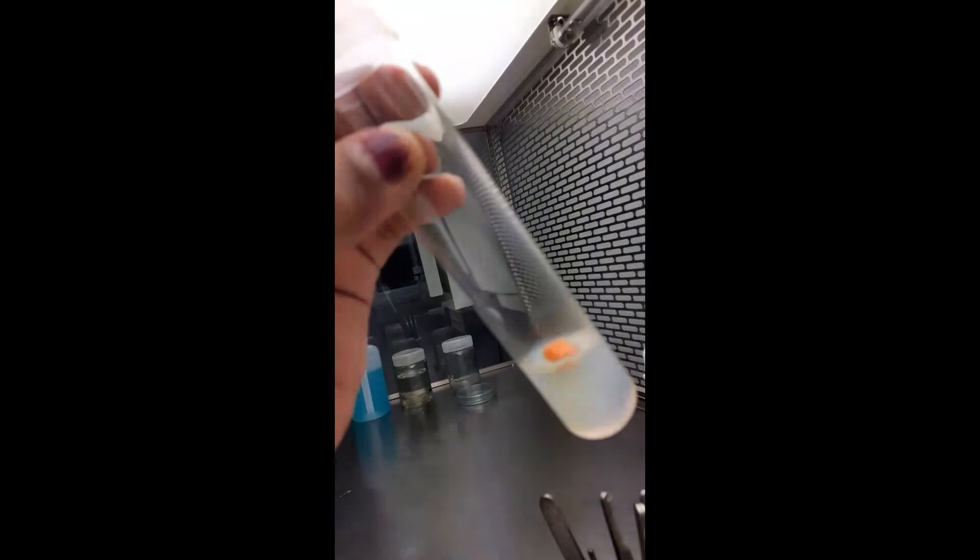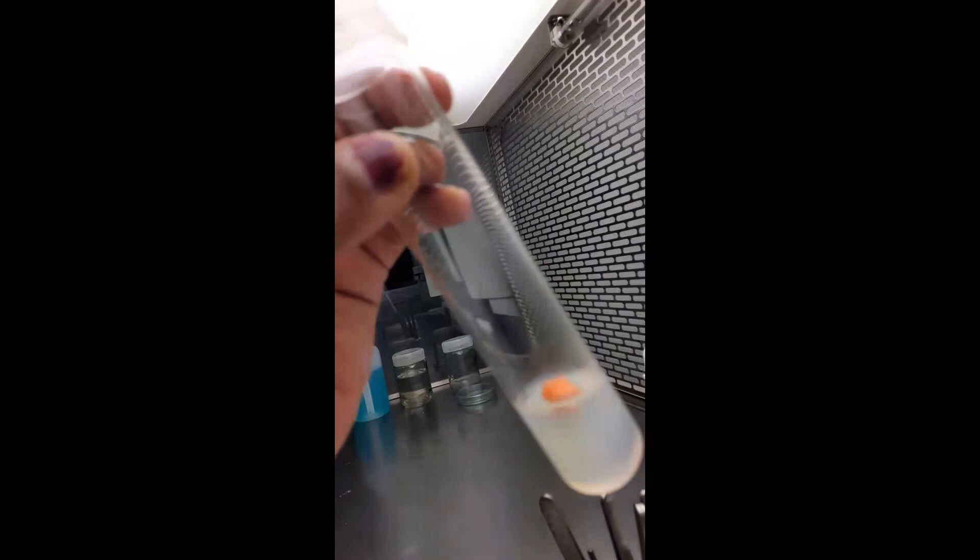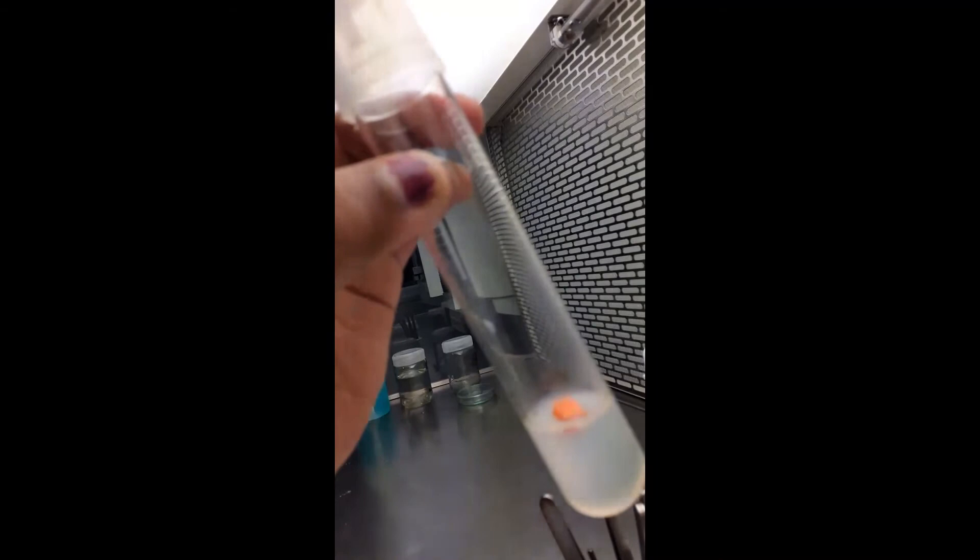Now this tube containing the carrot explant will be incubated at 25°C plus or minus 2°C. First, for 7 days it will be incubated in dark conditions, and then for 14 to 21 days it will be incubated in light conditions in an incubation or growth room. After 21 days of incubation in light conditions, you will see callus develop from this tissue.